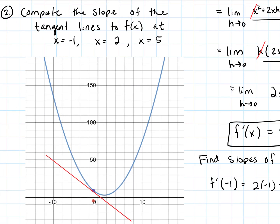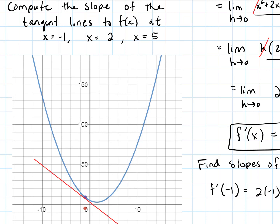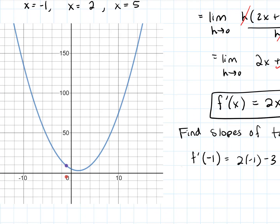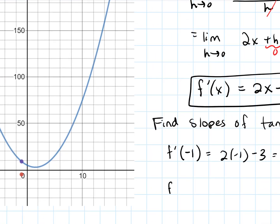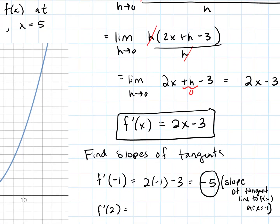Looking at the graph, a negative slope makes sense there — the function is going down, it's decreasing. That tangent line has a slope of negative 5. Now at x equals 2: f prime of 2 equals 2 times 2 minus 3, which is positive 1. That's the slope of the tangent line at x equals 2.